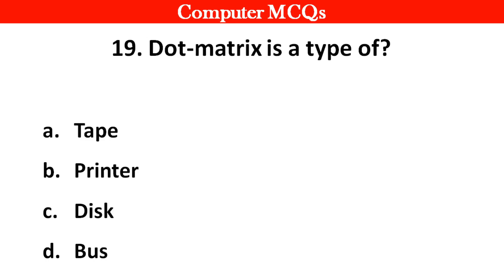Dot matrix is a type of: option A tab, B printer, C disk, D bus. Right answer is option B, printer.